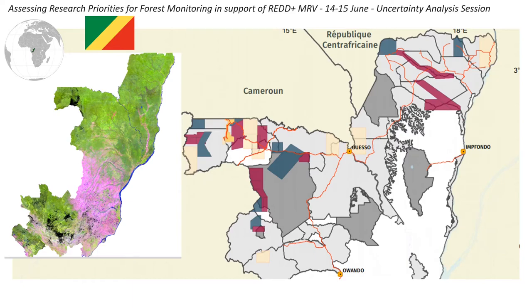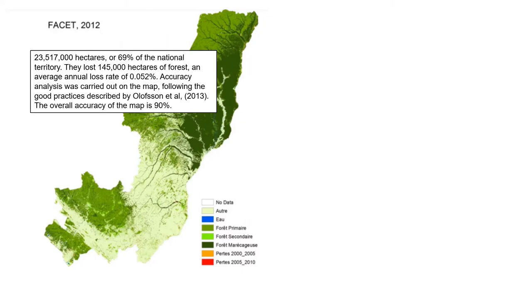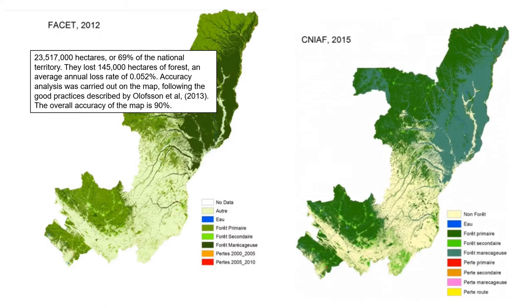We have logging activities, artisanal mining, and shifting agriculture from the north to the south of the Republic of Congo. Congo's commitment to the REDD+ process has led the country to improve forest cover monitoring using a combination of indirect and direct methods. The Republic of Congo found itself needing to produce forest maps that present the recent situation of forest area, the dynamics of forest cover losses between different dates, and to monitor greenhouse gas emissions to enable decision makers to anticipate mechanisms for reducing emissions.